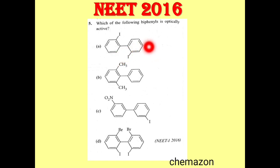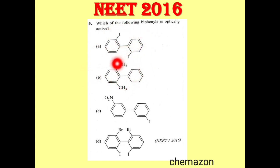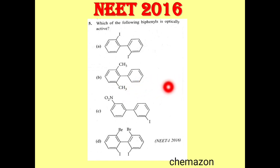In option A, only two ortho positions are substituted. In option B, again only two ortho positions are substituted. In option C, none of the ortho positions are substituted. In option D, all four ortho positions are substituted with bigger groups like bromine and iodine. So the correct answer is option D.